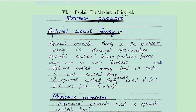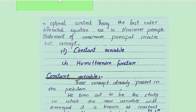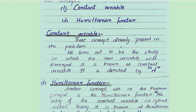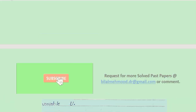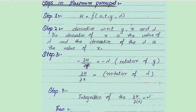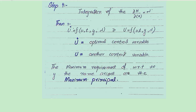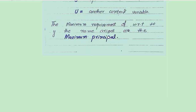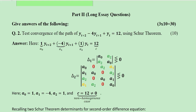The final theoretical short question is about the maximum principle, and its theory is also given here. You can pause the video and try to make sense of this. After understanding the various components, we have the various steps of applying the maximum principle — it is concluded with the help of four steps. Then we have the long essay questions.